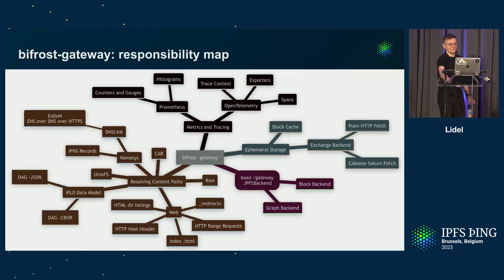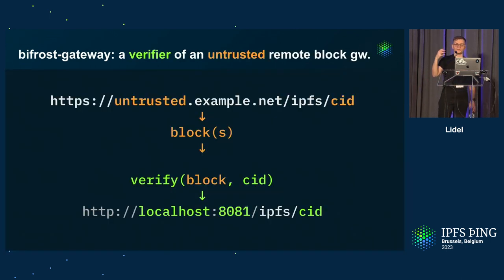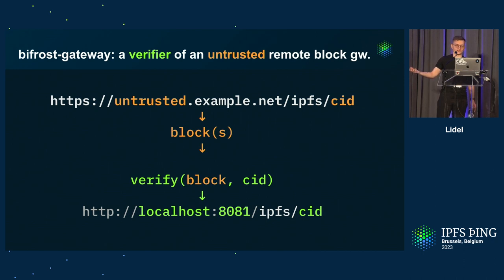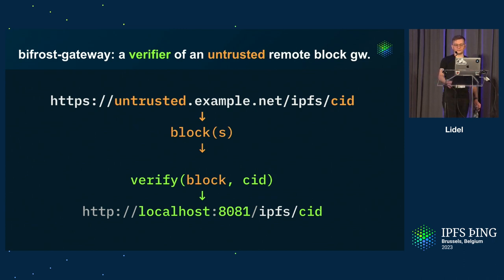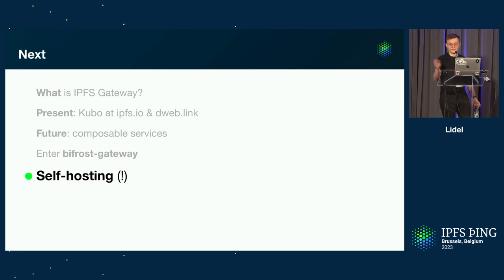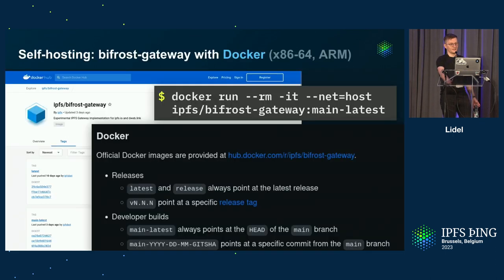The most important thing to take away: if you want to summarize Bifrost gateway in one sentence, it's a verifier service of an untrusted remote block store. Everything else is implementation detail. You may not want serialized responses and instead request block by block, or maybe request a CAR stream when you have a block store that only supports block-by-block and don't want to pay the verification cost on the client — the Bifrost gateway acts as a verifier for you. And that's where we get to self-hosting.